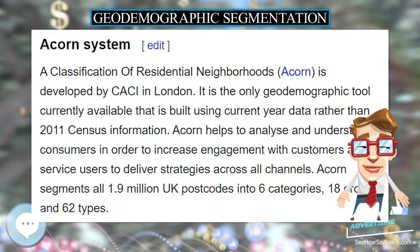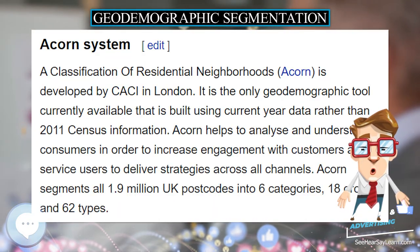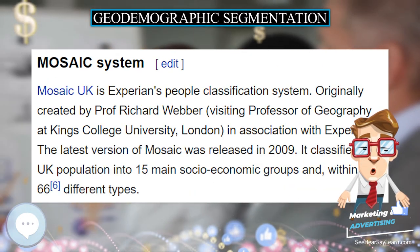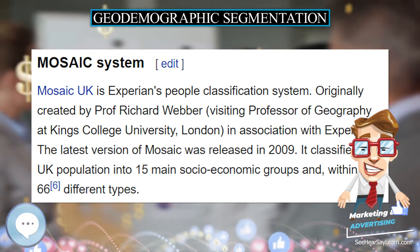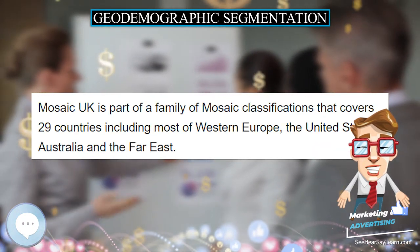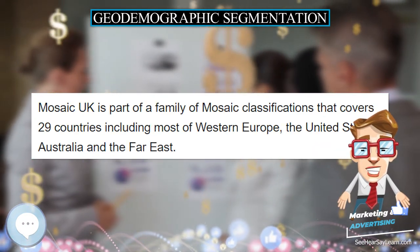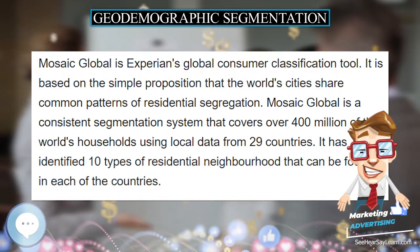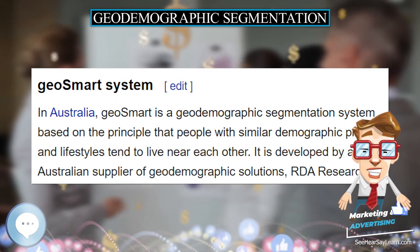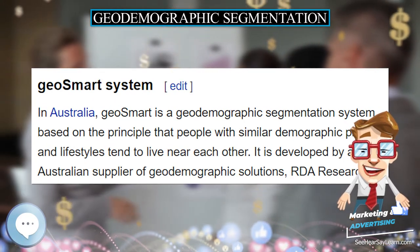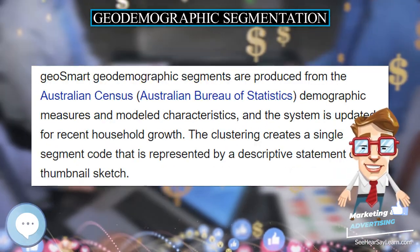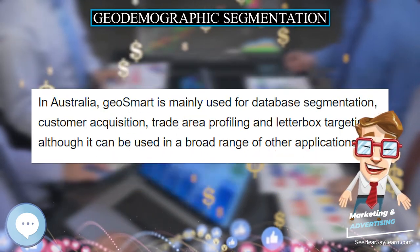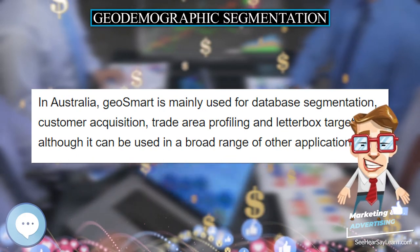Acorn System. A Classification of Residential Neighborhoods, Acorn, is developed by CACI in London. It is the only geodemographic tool currently available that is built using current-year data rather than 2011 census information. Acorn helps analyze and understand consumers in order to increase engagement with customers and service users to deliver strategies across all channels. Acorn segments all 1.9 million UK postcodes into 6 categories, 18 groups, and 62 types.